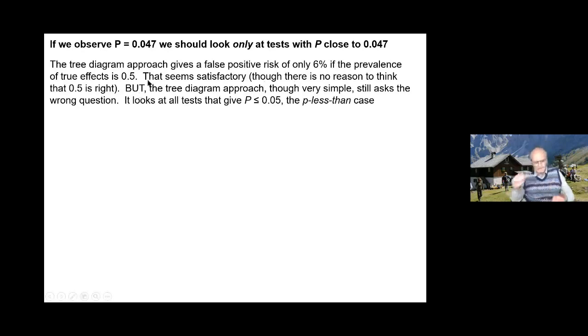That tree diagram approach gave a false positive risk of only 6% if you assume that the prevalence of true effects was 0.5, prior odds of 1. Six percent isn't much different from 5%, so it might seem okay. But the tree diagram approach, which is very simple, asks the wrong question. It looks at all tests that give p ≤ 0.05, the p-less-than case.